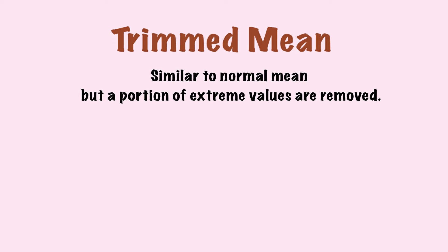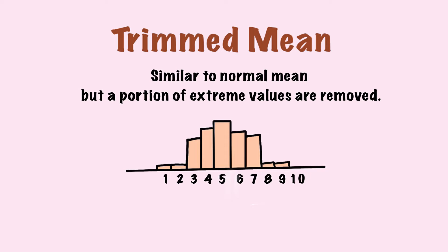Another modified version of mean is trimmed mean. It's the traditional mean with a portion of extreme values removed. Say we have data like this — each bar represents the number of people responding to a certain answer. We can tell the majority of people answer 3, 4, 5, 6, and 7. We may consider the people answering 1, 2, 8, and 9 as extreme, since their answers deviate from the remaining values. We sometimes remove extreme data to capture the general trend better, as they may unfairly affect the traditional mean.